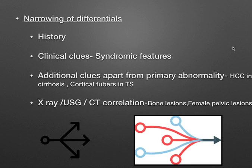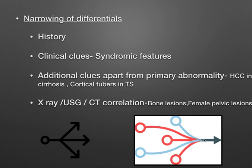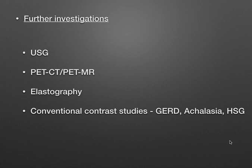Always do correlations yourself — X-ray, USG, or CT correlations. Bone lesions and female pelvic lesions always need multimodality correlation. Once you find a lesion, you may initially have many differentials, but by picking up all important points — characteristic location, findings, and correlations — you can narrow down to a single conclusive diagnosis.